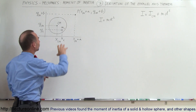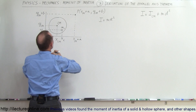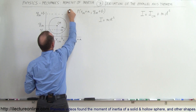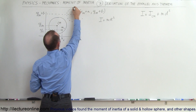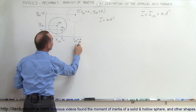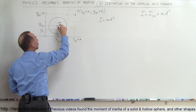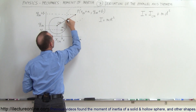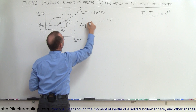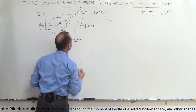Now what happens when we move the object to a different location? We move it so that the center of mass is now located over here. We moved it a distance a in the x direction and a distance b in the y direction. So the displacement d is equal to the square root of a² plus b².